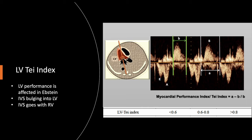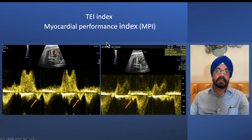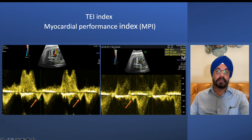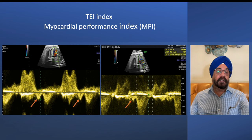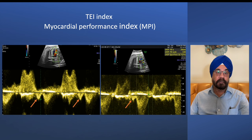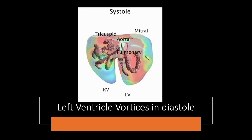Calculating the TEI index: it includes isovolumic contraction time, isovolumic relaxation time, and ejection time. In this patient, the TEI index was 0.84. Notably, there is an unusual wave appearing after diastole, during the isovolumic contraction period. These are called pre-systolic waves, and we know from pediatric and adult cardiology that pre-systolic waves carry a bad outcome.